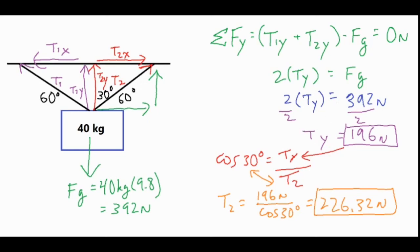Once we have one side of the triangle and an angle, we can use trig, which we did with cosine of 30 degrees. That gave us our tension of 226.32 newtons. I hope that was helpful. Thank you for watching.